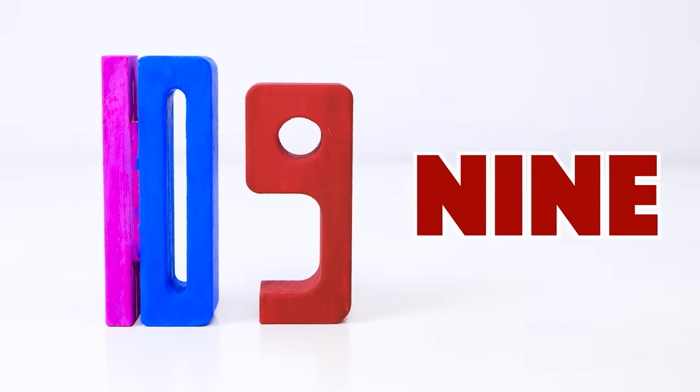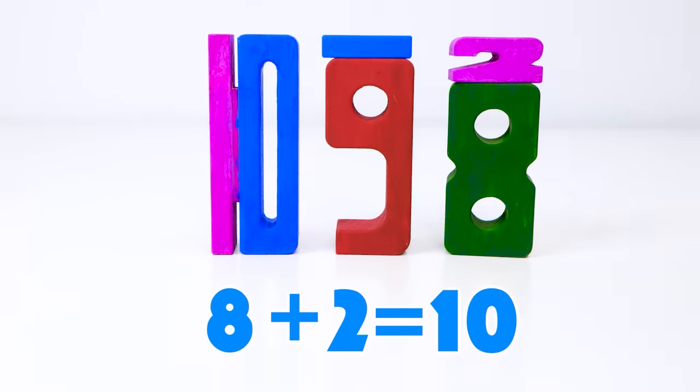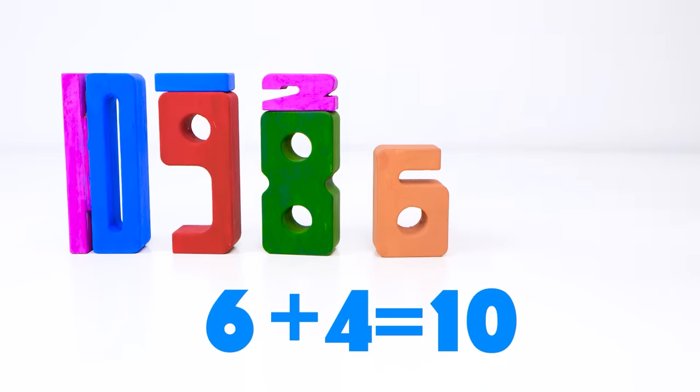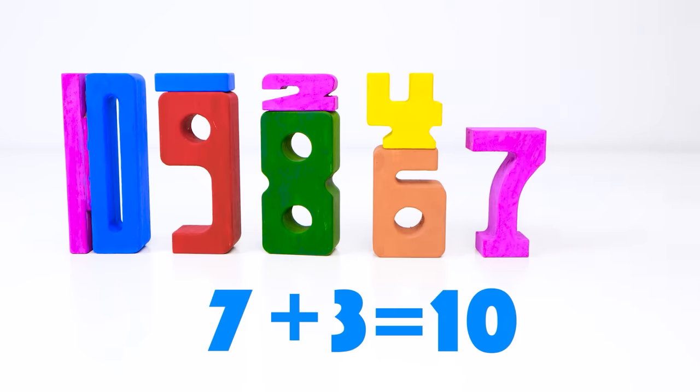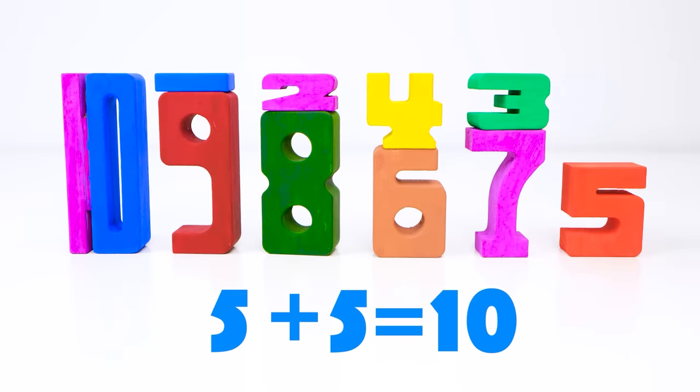We can get it from nine and one. Nine plus one equals ten. Let's see. Eight plus two also equals ten. Six plus four equals ten, too. Seven plus three is ten as well. And if you add five and five, you get ten. Great.